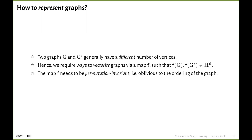One thing you always encounter in the machine learning literature is that this map needs to be oblivious to the ordering of graph entities — this is known as permutation invariance. The idea is that you can enumerate nodes in one way or reverse that enumeration or permute it, and of course you don't want your representation to depend on the node ordering. This is really important and kept the graph machine learning community busy for quite some time.